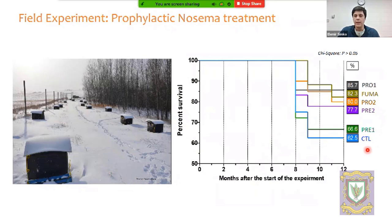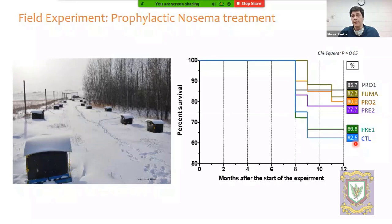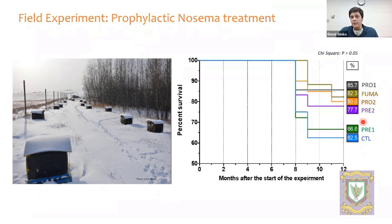In the survival graph, the control group — where bees were not treated — presented the lowest survival rate, as expected, showing how important prophylactic treatment against nosema is here in Canada. The group treated with fumagillin presented quite good survival — 82.3% of the colonies survived overwintering when prophylactically treated with fumagillin.